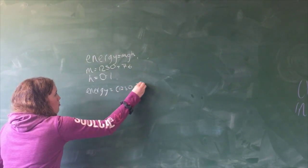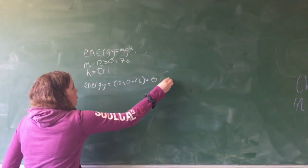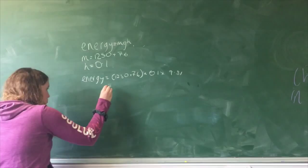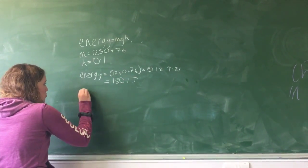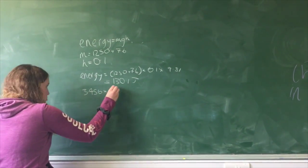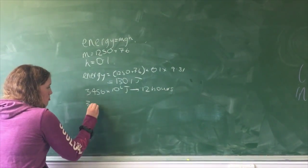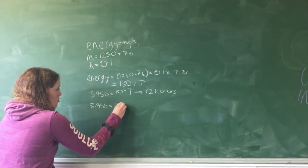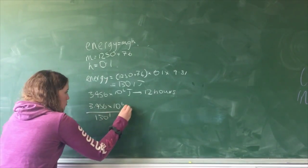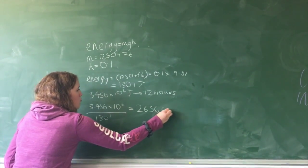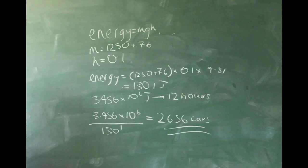This means the total energy generated from one car driving over one speed bump is around 1301 joules. To put this into perspective, it takes around 3.456 times 10 to the 6 joules to power a street lamp for 12 hours, so it would require 2,656 cars travelling over one speed bump to power one street lamp for 12 hours. And this is assuming all the gravitational potential energy is transferred directly to the street lamp with no losses.